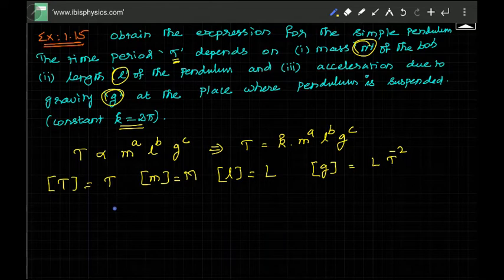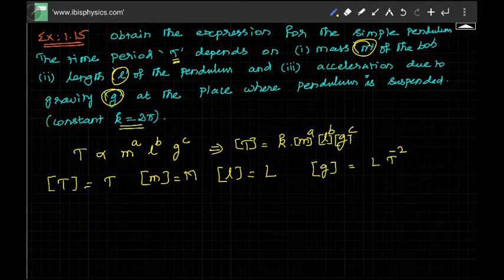The dimensions of T equal to dimensions of M^a, dimensions of L^b, dimensions of g^c. Dimensions of T is T and dimensions of K is 2π.